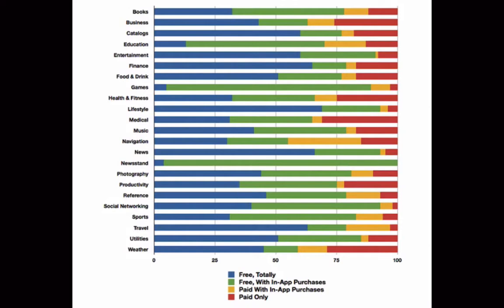In this graph we're showing the top 100 apps in each of the Apple App Store categories and how they're pricing their app. The blue bars represent apps that are free. They may be monetizing through an indirect means such as ads or direct product purchases, but we have no way of telling, so we're just going to leave it as a totally free app. One good example would be Amazon, where their app is free but you buy products through their app.